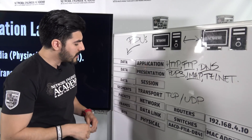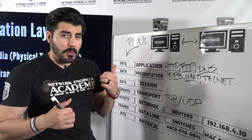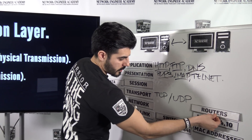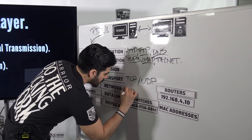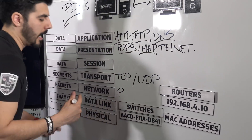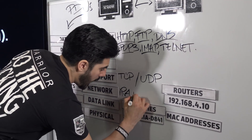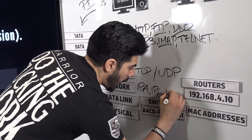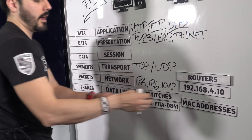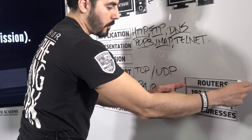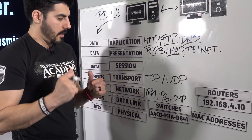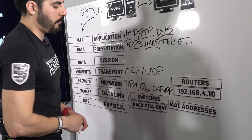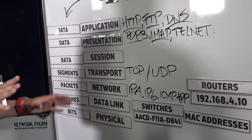On the network layer, routers use IP addresses. Key protocols here include IP version 4 and IP version 6, ICMP — which is used for the ping command — and ARP, the Address Resolution Protocol.